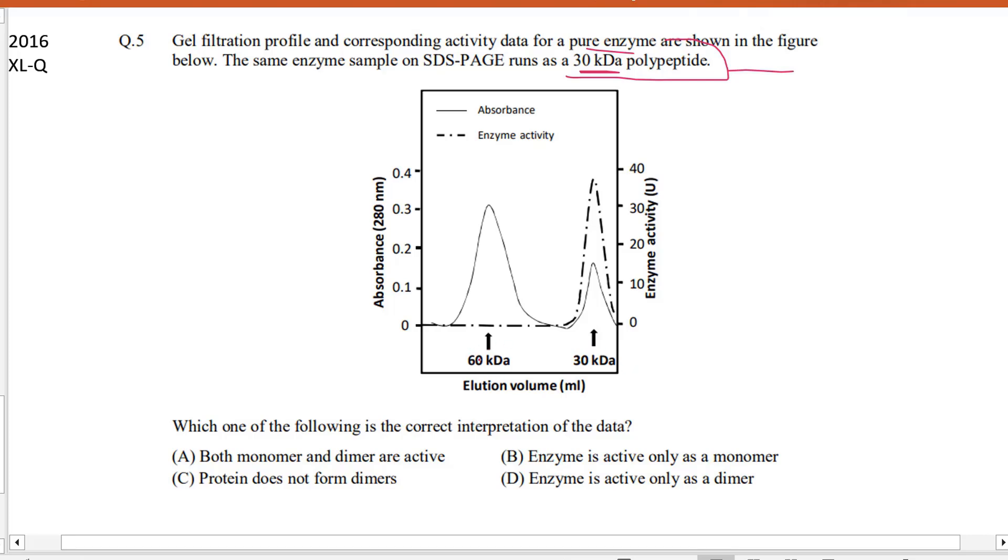That is understood by the monomeric form. So we see absorbance is high at 60 kilodalton and at 30 kilodalton it is a bit lower.